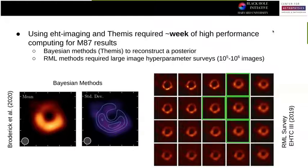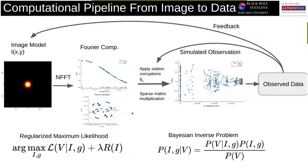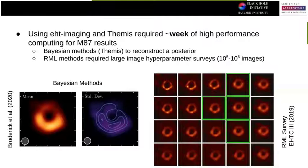The Bayesian method — a C++ code called THEMIS that I helped develop — took a week to construct the posterior. The RML methods, or regularized maximum likelihood methods, have these lambda terms where you have to say how smooth you want the image to be. Do you want it really smooth, like some Gaussian, or extremely noisy? You basically have to guess and check over and over again until you meet some heuristics. It's not very automated, so you have to produce a ton of images and it takes a week on a cluster.